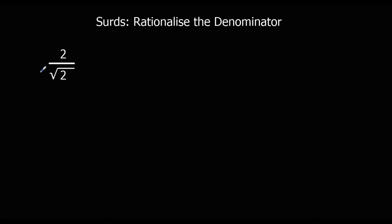In order to do this, remember with fractions: if we times the top and bottom by the same thing, it remains the same. So I can times this bottom number by something, if I also times the top by it. And I know if I times root 2 by root 2, it's going to become 2 — it's going to get rid of the square root.